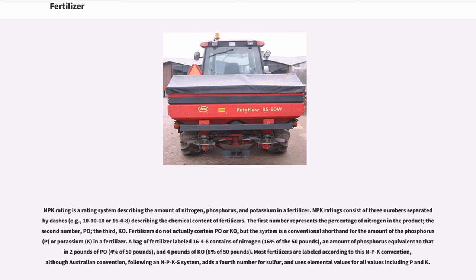Fertilizers do not actually contain P₂O₅ or K₂O, but the system is a conventional shorthand for the amount of phosphorus (P) or potassium (K) in a fertilizer. A bag of fertilizer labeled 16-4-8 contains 16% nitrogen, an amount of phosphorus equivalent to 2 pounds of P₂O₅ (4% of 50 pounds), and 4 pounds of K₂O (8% of 50 pounds). Most fertilizers are labeled according to this NPK convention, although Australian convention, following an NPKS system, adds a fourth number for sulfur and uses elemental values for all values including P and K.